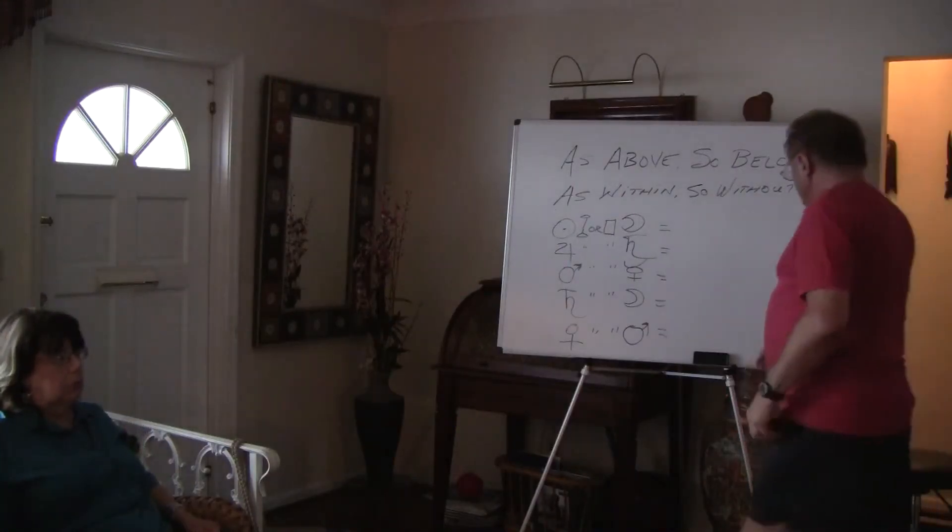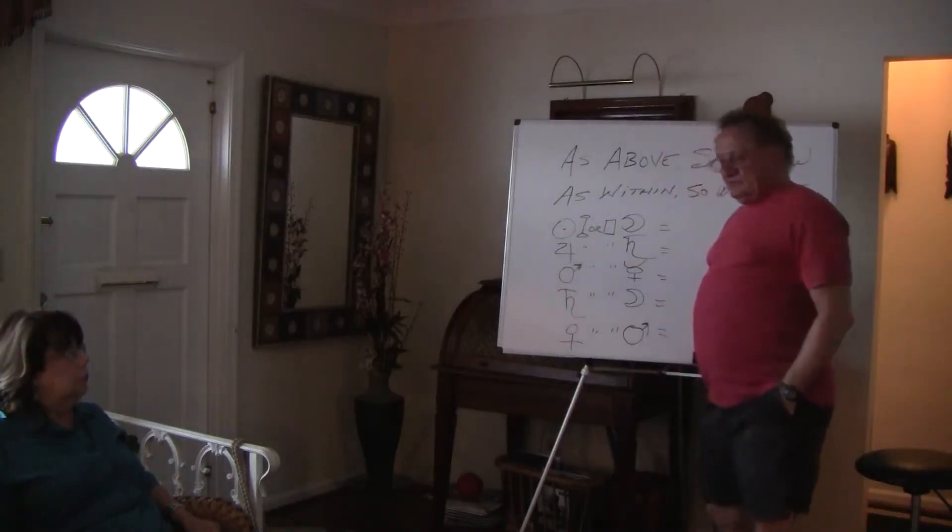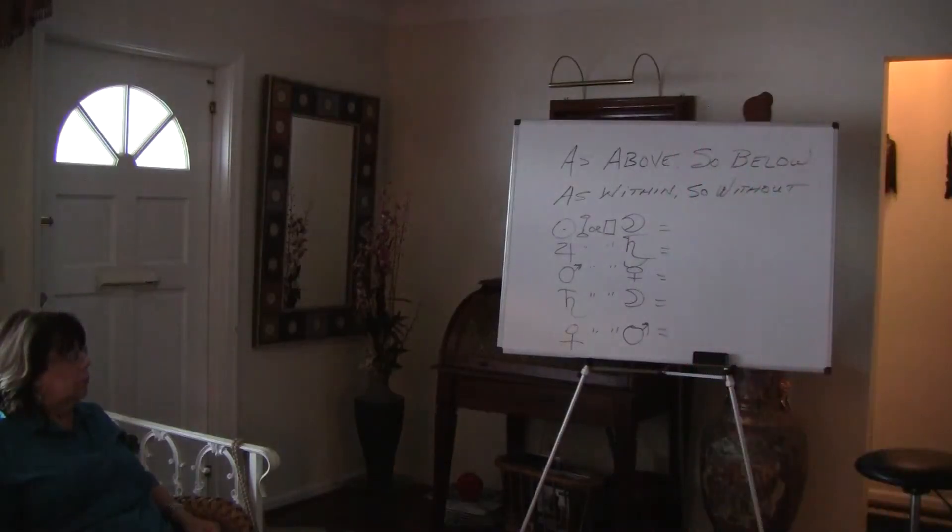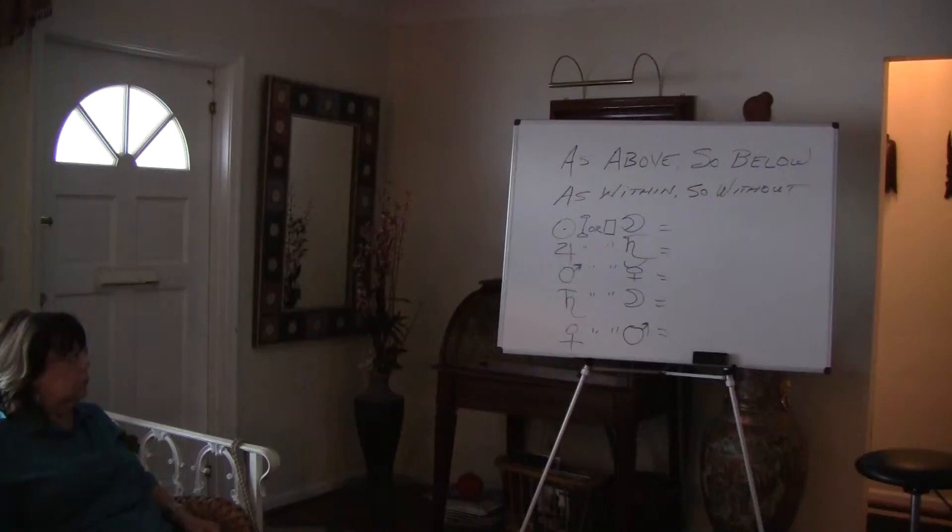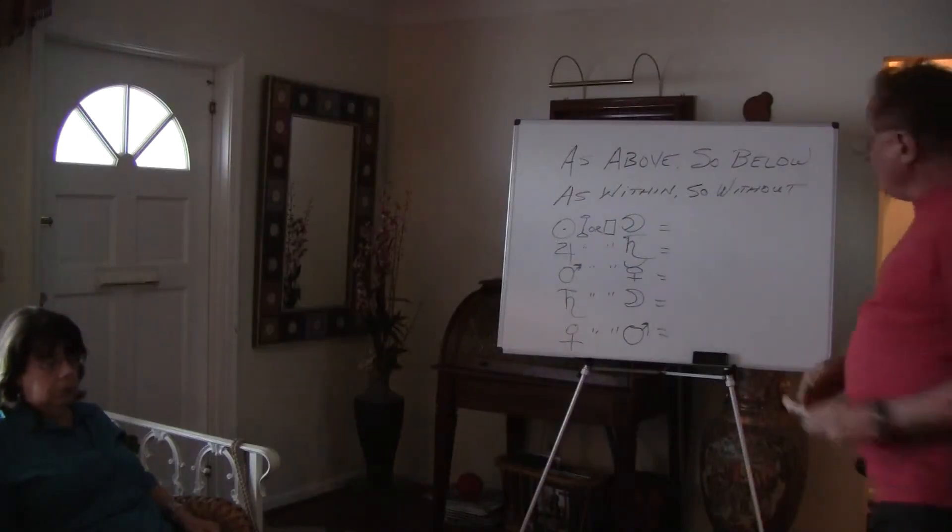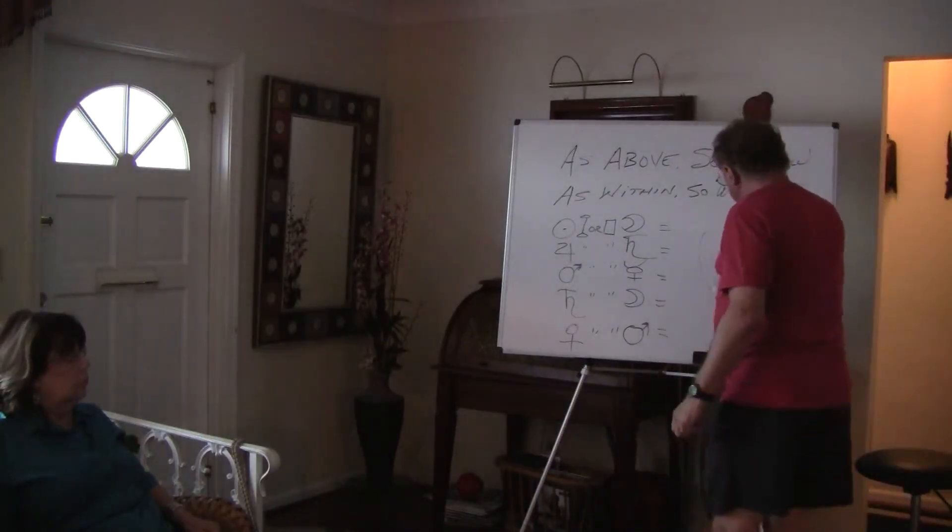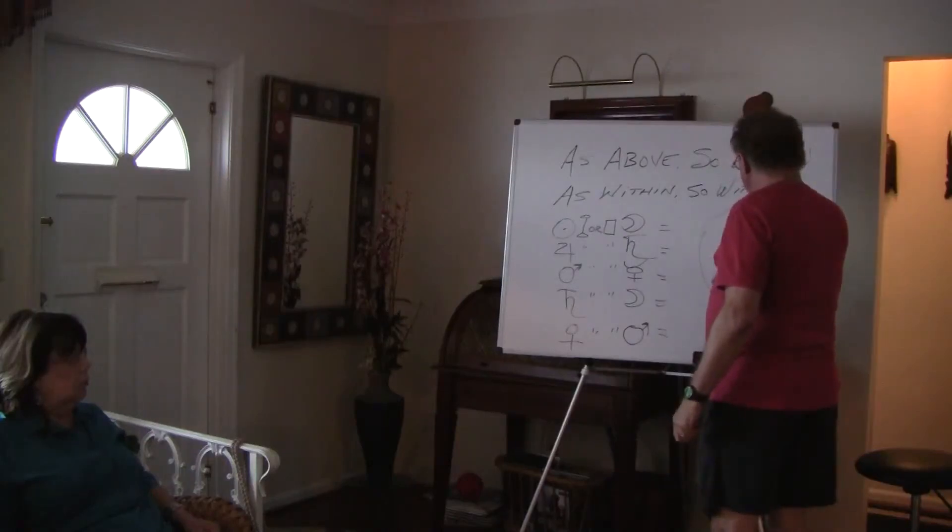So if a person was born with a sun moon, I'll show you real quick. I'll put my marker here. If you were born like with sun, in your case, you have a sun square moon. So your moon is over here squaring your sun by 90 degrees. So these are exact squares.